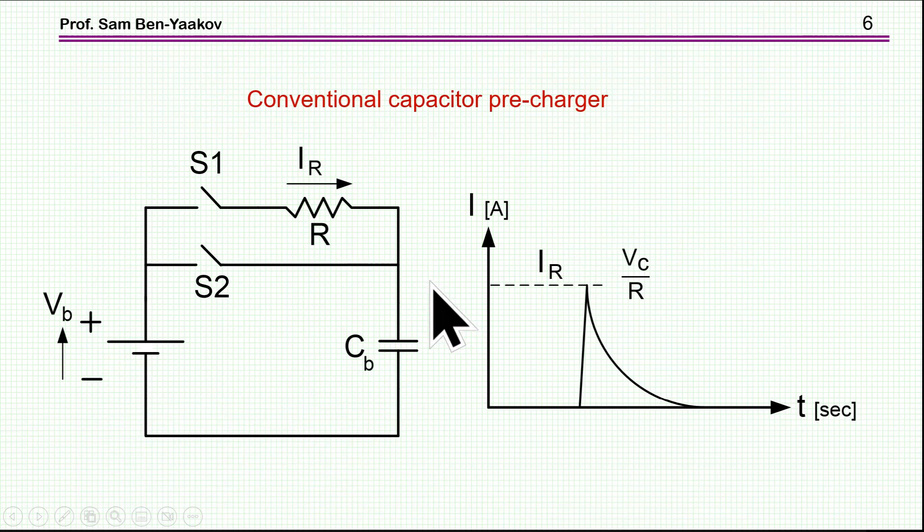To remedy this, the conventional approach is to use a precharger and this is the simplified version of it. Here is a pre-charge path having a switch and a power resistor. We charge the capacitor via the resistor and this is the profile. And then we turn on the switch, the main switch, and turn off the auxiliary switch and the system is ready for operation.